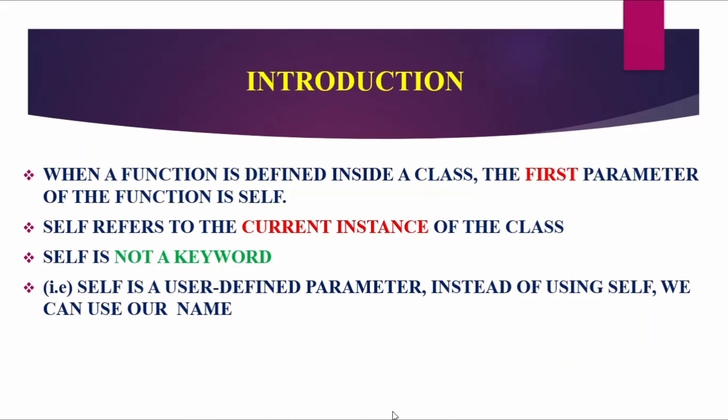When a function is defined inside a class, the first parameter of the function is 'self'. When we define a function inside a class, that function becomes a member function of the class. The first parameter of the function is 'self', and we call it self because self refers to the current instance of the class.